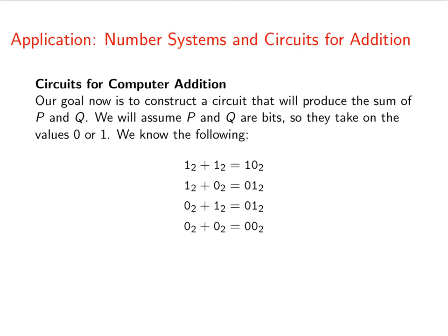Now we know this: 1 plus 1 is 10, 1 plus 0 is 01, 0 plus 1 is 01, and 0 plus 0 is 00. I just put in some leading zeros for clarity. These are the leading zeros that you wouldn't ordinarily put in.